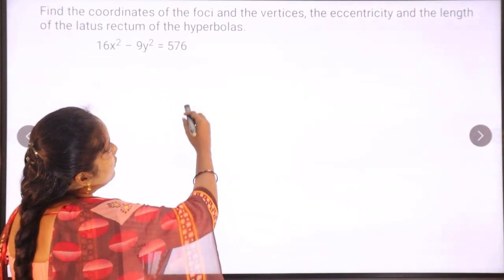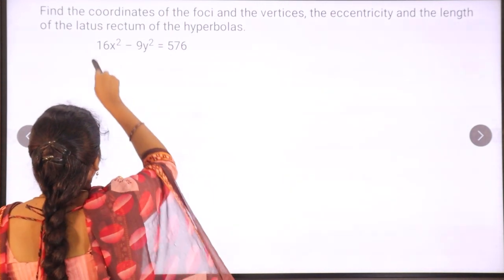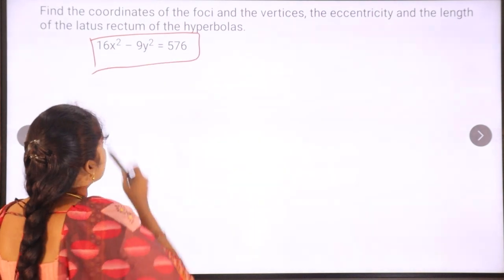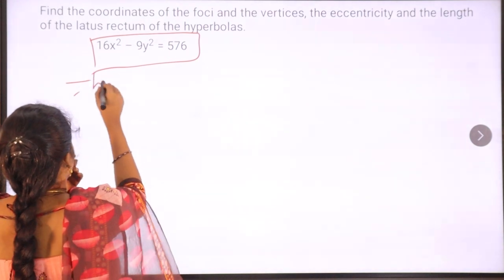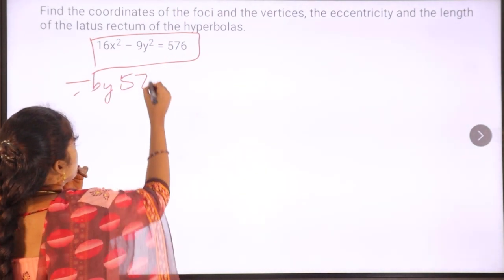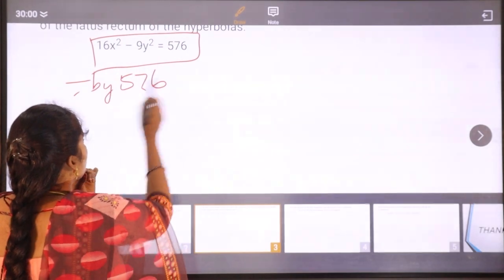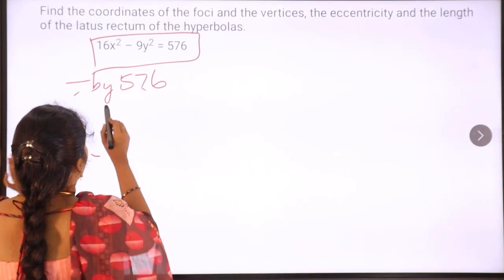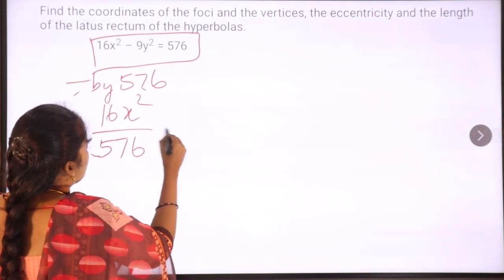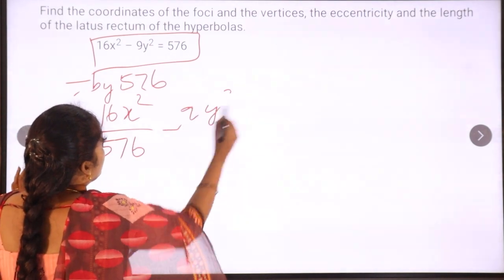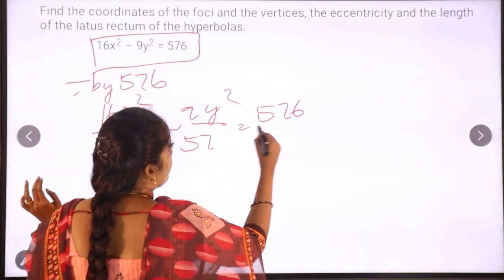Find the coordinates of the foci and vertices, eccentricity and length of the latus rectum of the hyperbola. The equation of the hyperbola is not in standard form, so we have to convert it into standard form by dividing both sides by 576. The right-hand side becomes 1, and the whole term is divided by 576. So 16x squared by 576 minus 9y squared by 576 is equal to 576 by 576.